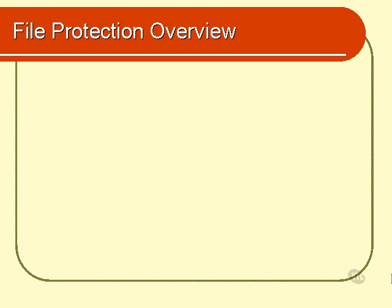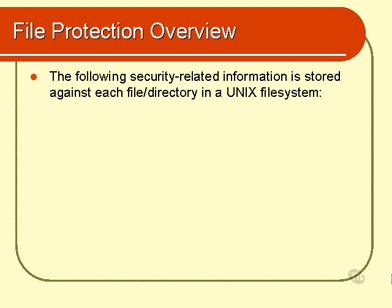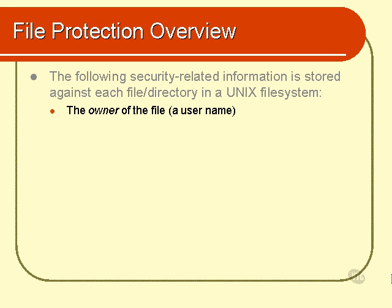In this module we examine the information that is stored against each file and directory on the system. There are three things stored against each file and directory. First is who owns the file — this is always a user ID or a username, known simply as the owner of the file. Every file has an owner.